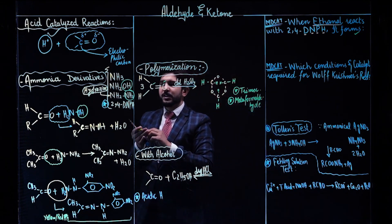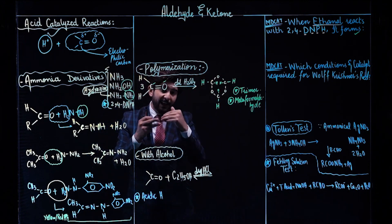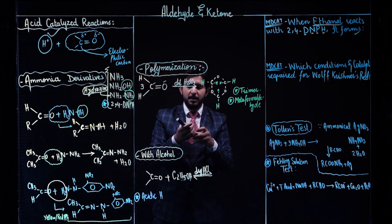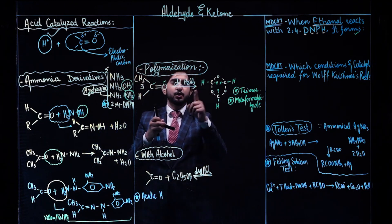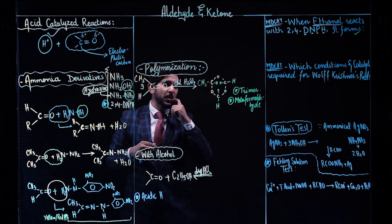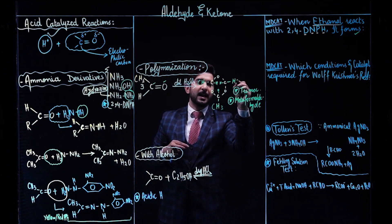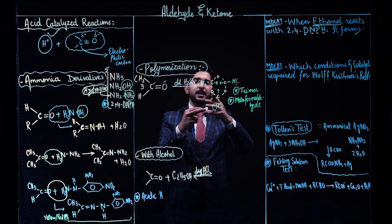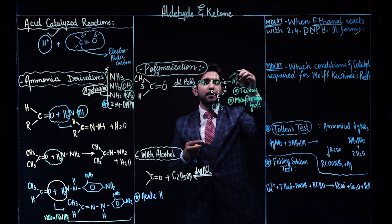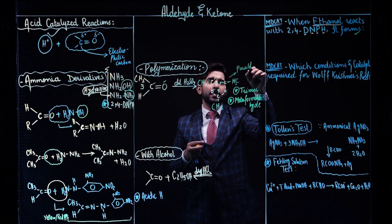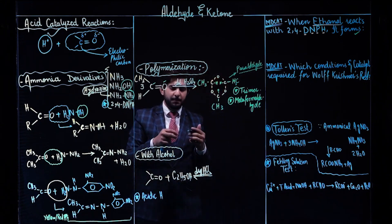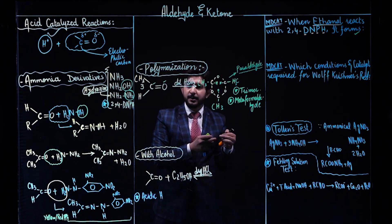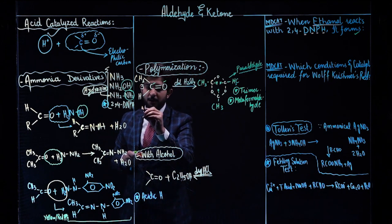If I use CH₃ and H — that is, if I use ethanal — the same process occurs, but we just replace H with CH₃. So the H at each position converts to CH₃, and this molecule is named paraldehyde. The process is the same. Remember that aldehydes undergo polymerization. Ketones do not give polymerization.